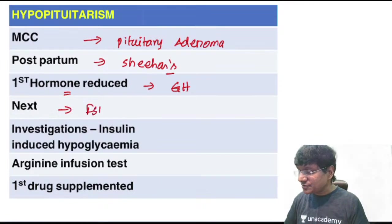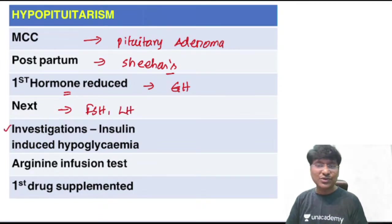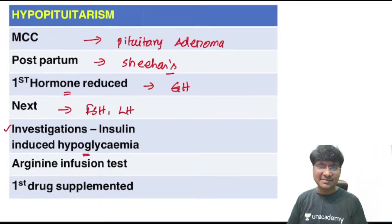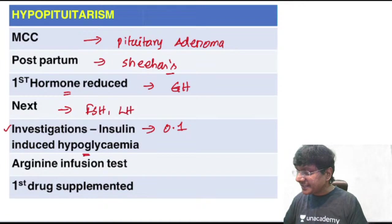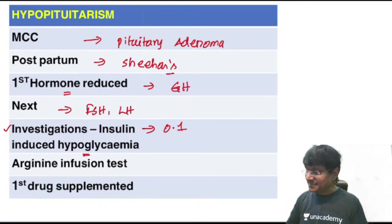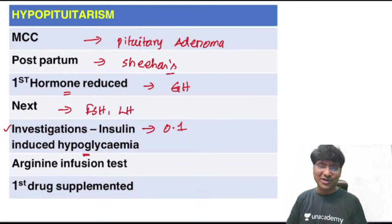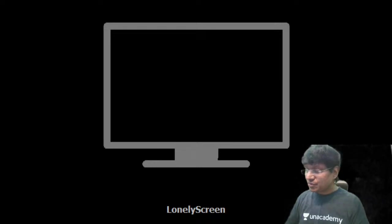To diagnose reduced growth hormone, use the provocative test — insulin-induced hypoglycemia. Give 0.1 microgram/kg of insulin to induce hypoglycemia. Normally this should increase growth hormone levels; in hypopituitarism there is failure to increase growth hormone.